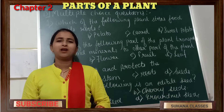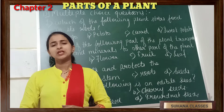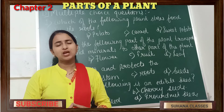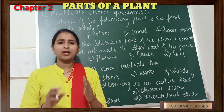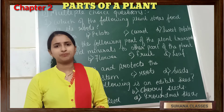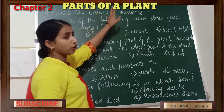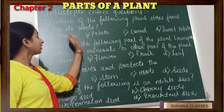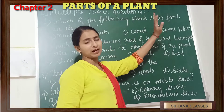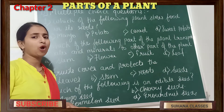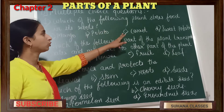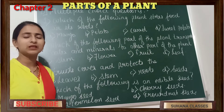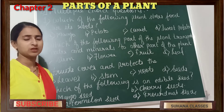Welcome back, students. Here we are with question D of our exercise from the second chapter, Parts of a Plant. Question D is multiple choice questions. Some questions are given to us with correct options in the form of four choices, and we have to tick the correct answer from the given options.